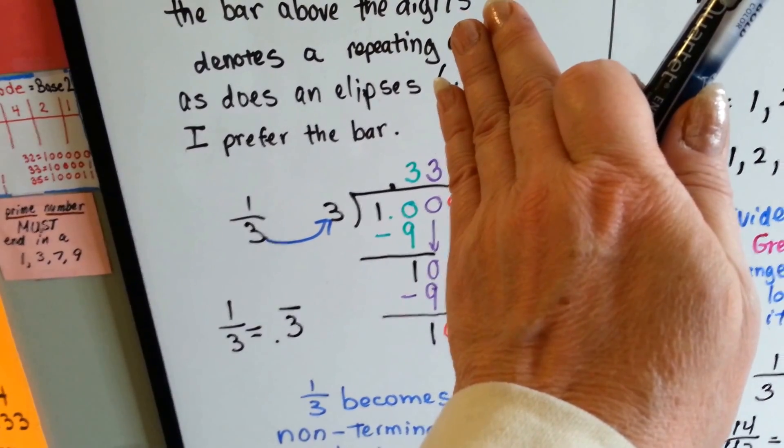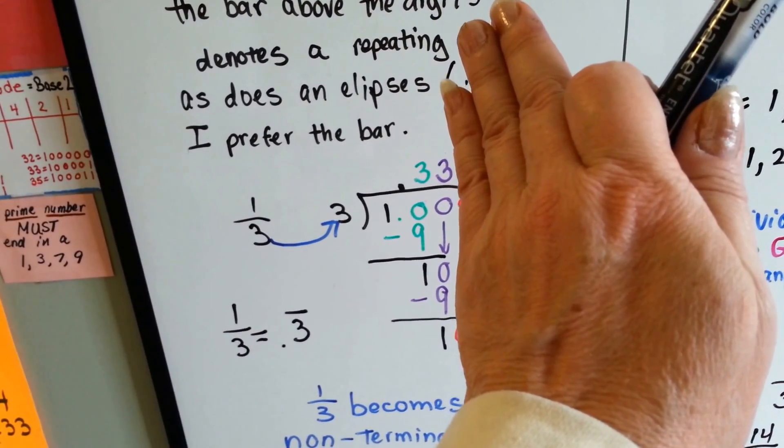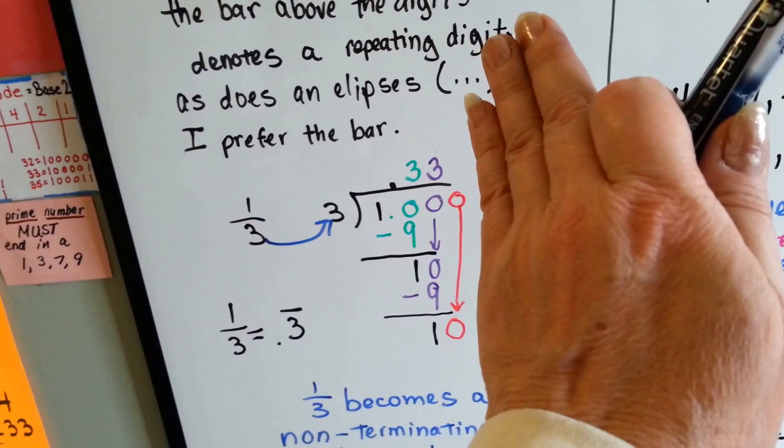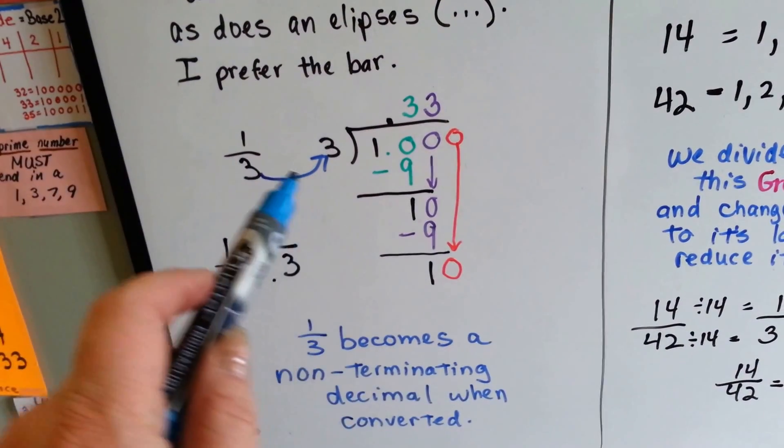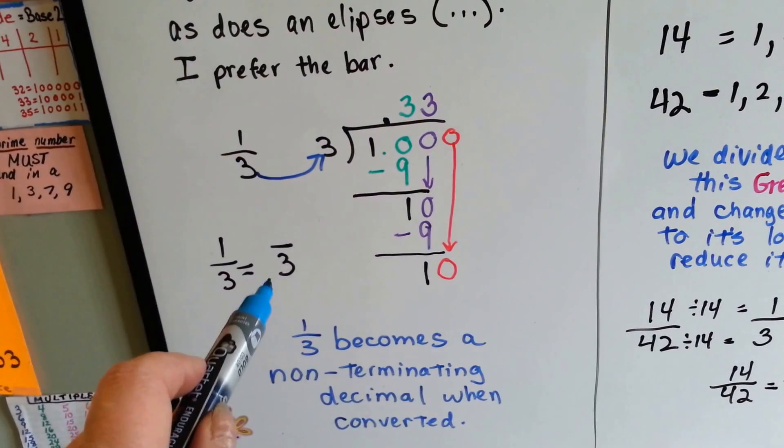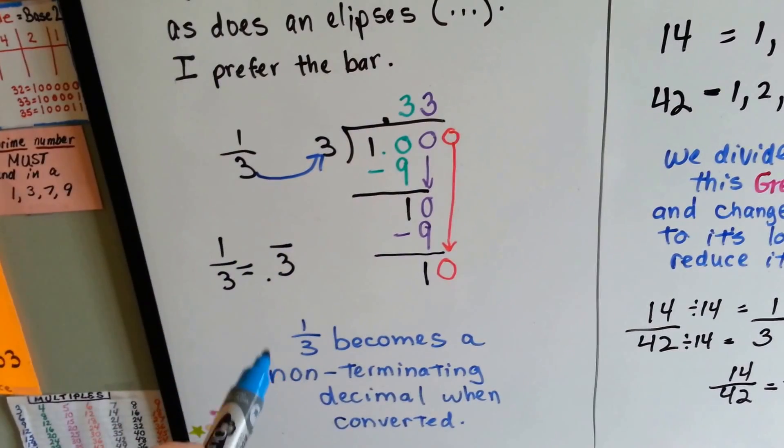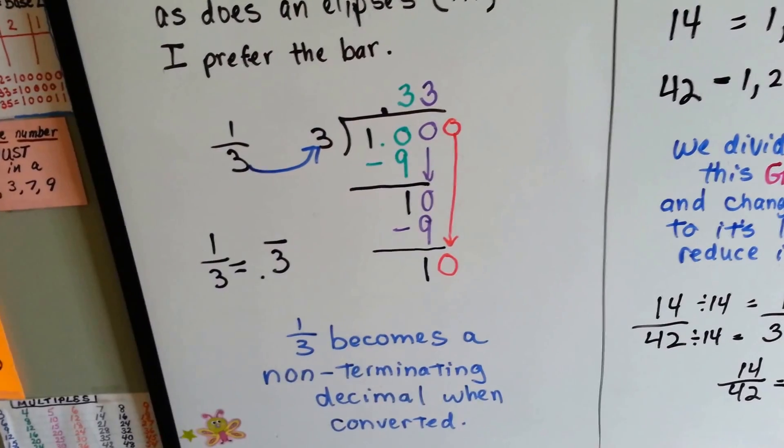And 3 goes into 10 three times. 3 times 3 is 9. We do our subtraction, we get 1, and we add another 0. And this keeps happening and happening. So what we do is we just stop and put .3 with a bar over the top because it becomes a non-terminating decimal when we try to convert it.